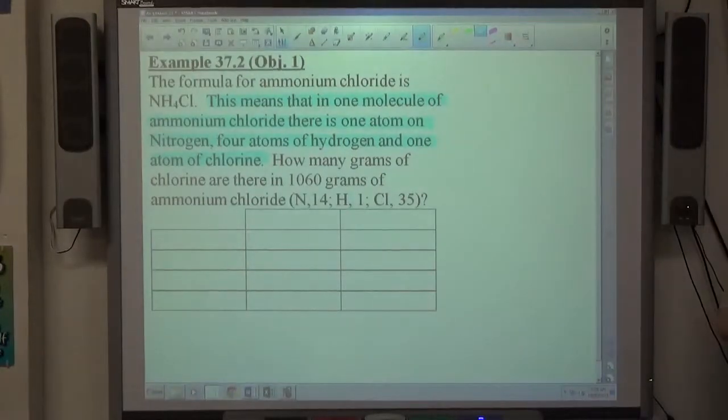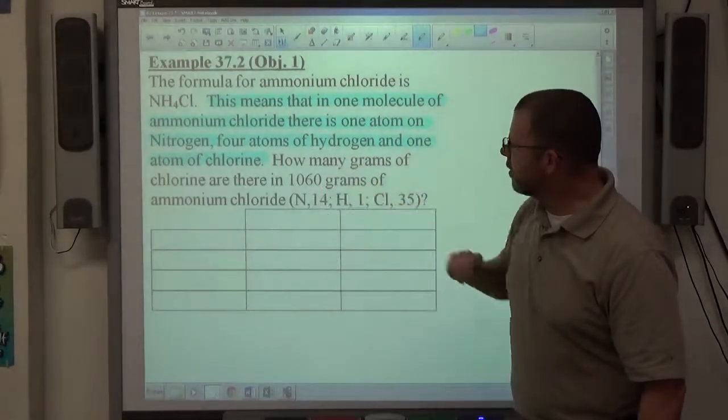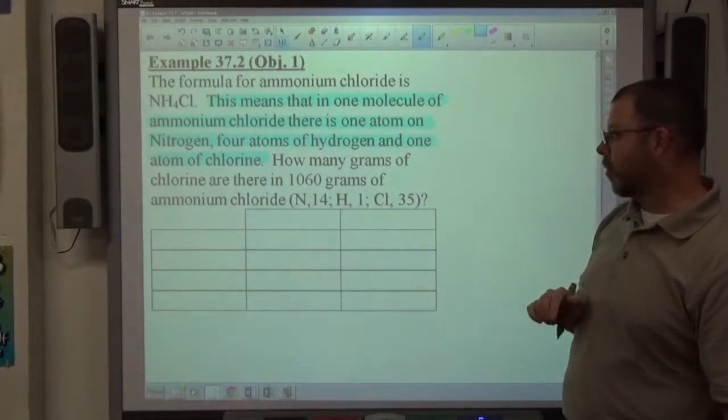If you already know what it means, you can read on past that and get to the guts of the problem, which is, how many grams of chlorine are there in 1,060 grams of ammonium chloride?